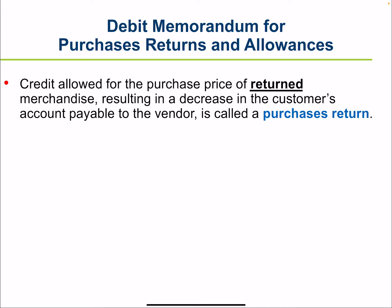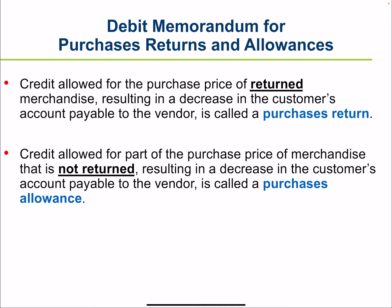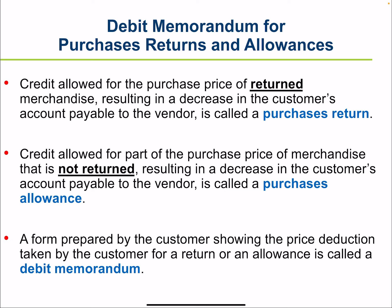When merchandise is damaged but still usable, or is of different quality than ordered, the vendor may let the customer keep the merchandise at a reduced price. Credit allowed for part of the purchase price of merchandise that is not returned, resulting in a decrease in the customer's accounts payable, is called a purchase allowance. A purchase return and allowance should be confirmed in writing. A form prepared by the customer showing the price deduction taken for a return or allowance is called a debit memorandum.